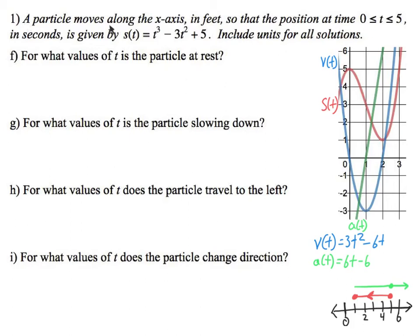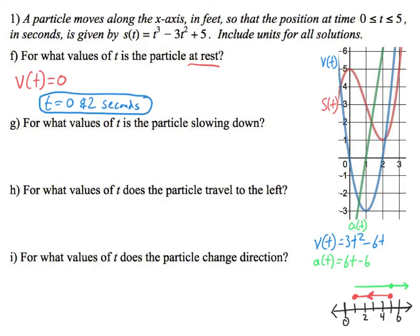We are going to continue this problem from the previous video, this is F through I. What is the value of t for which a particle is at rest? When you hear 'at rest,' what you need to know is your velocity is zero because you're not moving — there's no rate of change. You can look at the graph and see where your velocity is zero, and that would be at zero and two, so your answer is t equals zero and two seconds. Now if we didn't have the graph, how would we solve it? We set this equal to zero and solve.